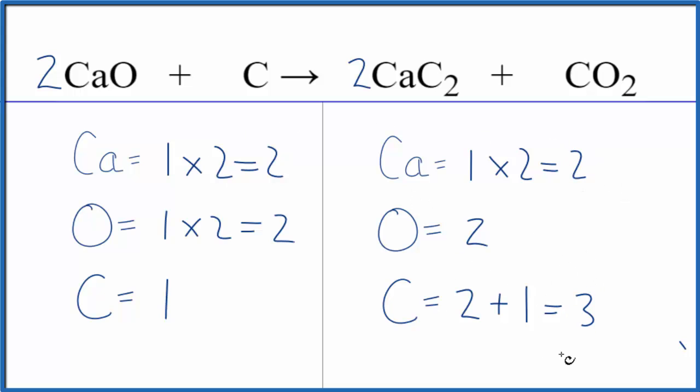Now we need to update the carbon atoms, though. 2 times the 2, that gives us 4, plus we have 1 carbon in the carbon dioxide for a total of 5. So now all we have to do to get 5 carbons here in the reactants, we put a 5 in front of the carbon. 1 times 5, that gives us 5, and we're done.